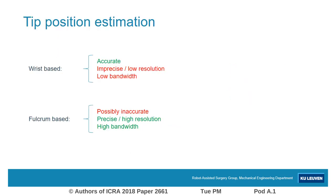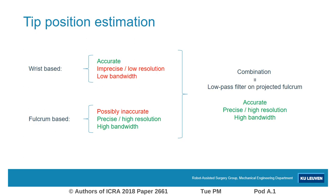I'd like to show that the fulcrum can also enhance the estimation of the tip position. In fact, there is redundant information for the tip position. It can be directly derived from the measured wrist pose or indirectly based on the fulcrum position. Both of these approaches have shortcomings, but their combination will eliminate these such that accurate, precise, and high bandwidth tip position estimates can be obtained.